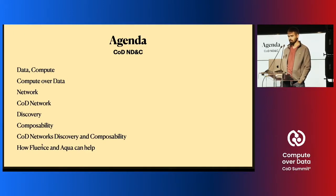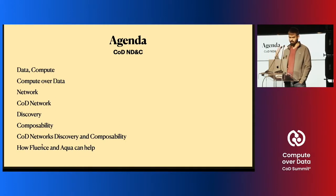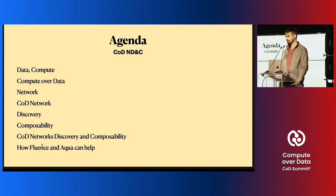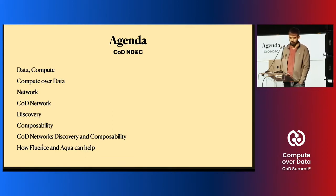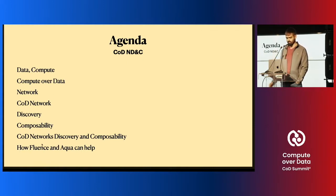I decided to go straight from the fundamentals. I will speak about data, compute, computer data network — what does it mean to have a computer data network and why do we need meaning, what does it mean discoverability, composability, and finally when we have some understanding of the problem, I will tell what we at Fluence do to help with this problem.